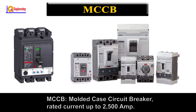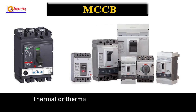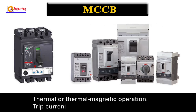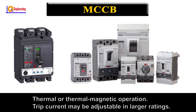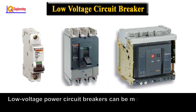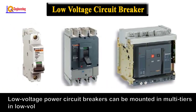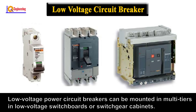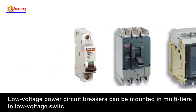MCCB — Molded Case Circuit Breaker: rated current up to 2500A, thermal or thermal-magnetic operation, trip current may be adjustable in larger ratings. Low voltage power circuit breakers can be mounted in multi-tier low-voltage switchboards or switchgear cabinets.